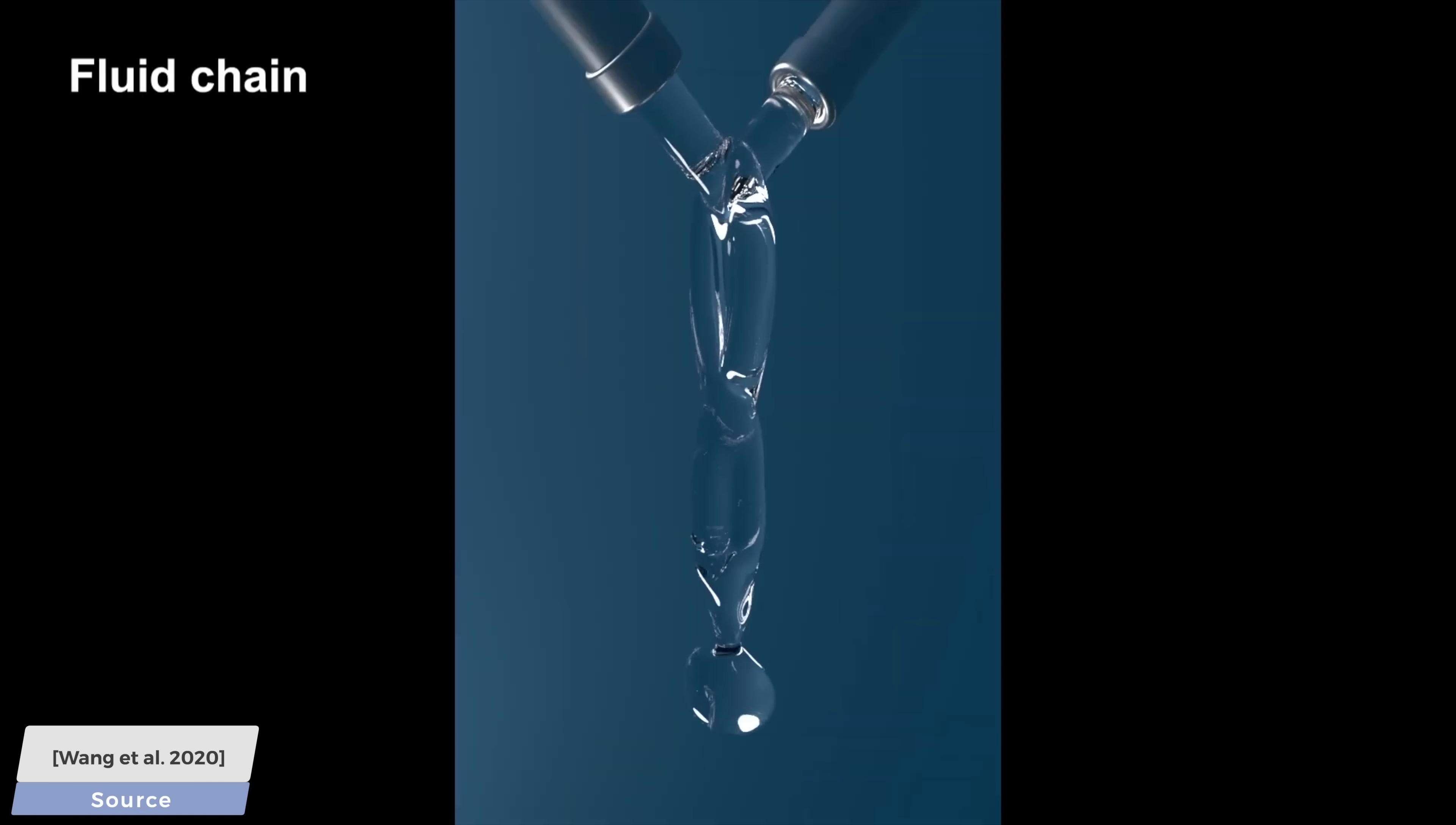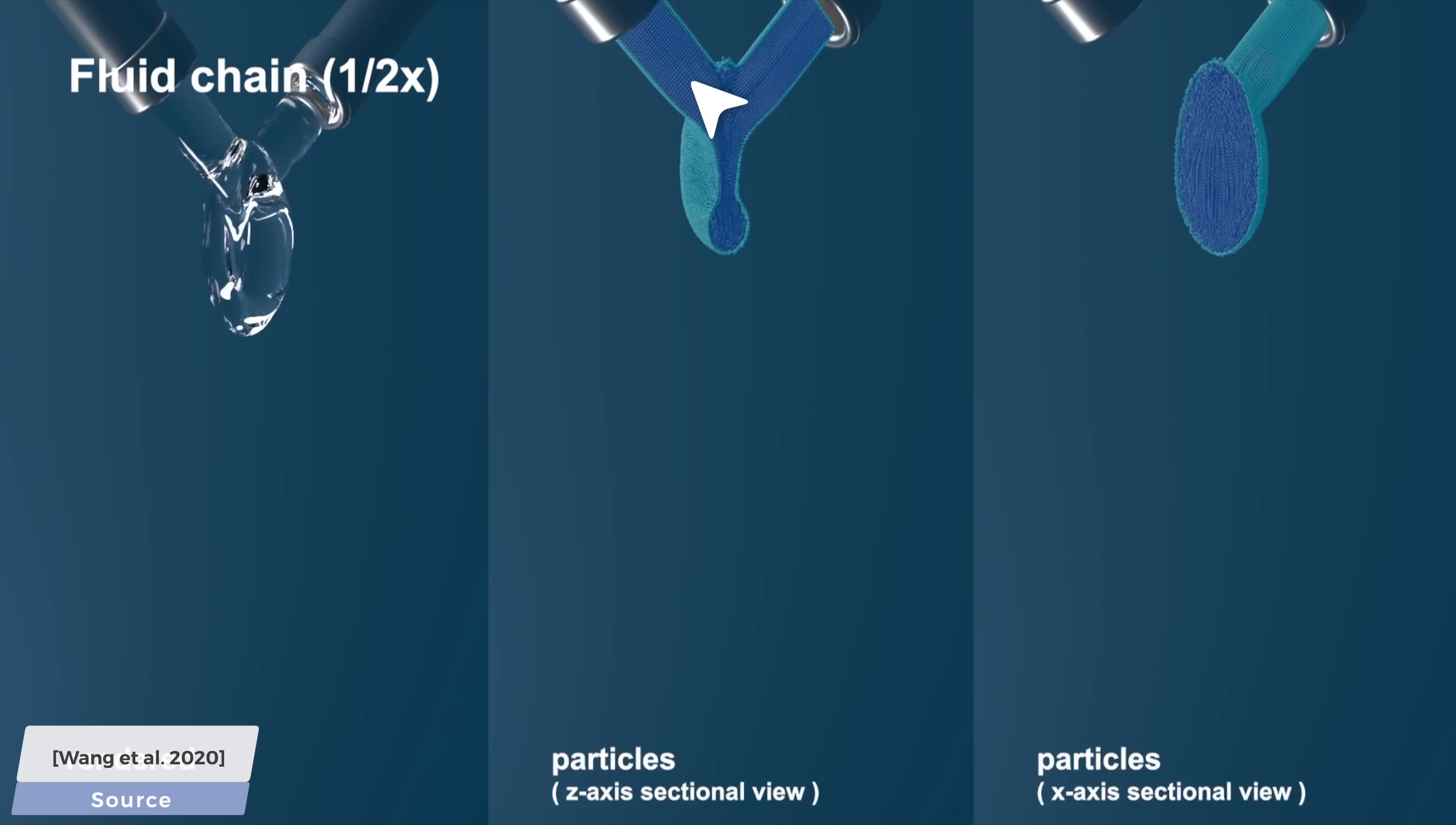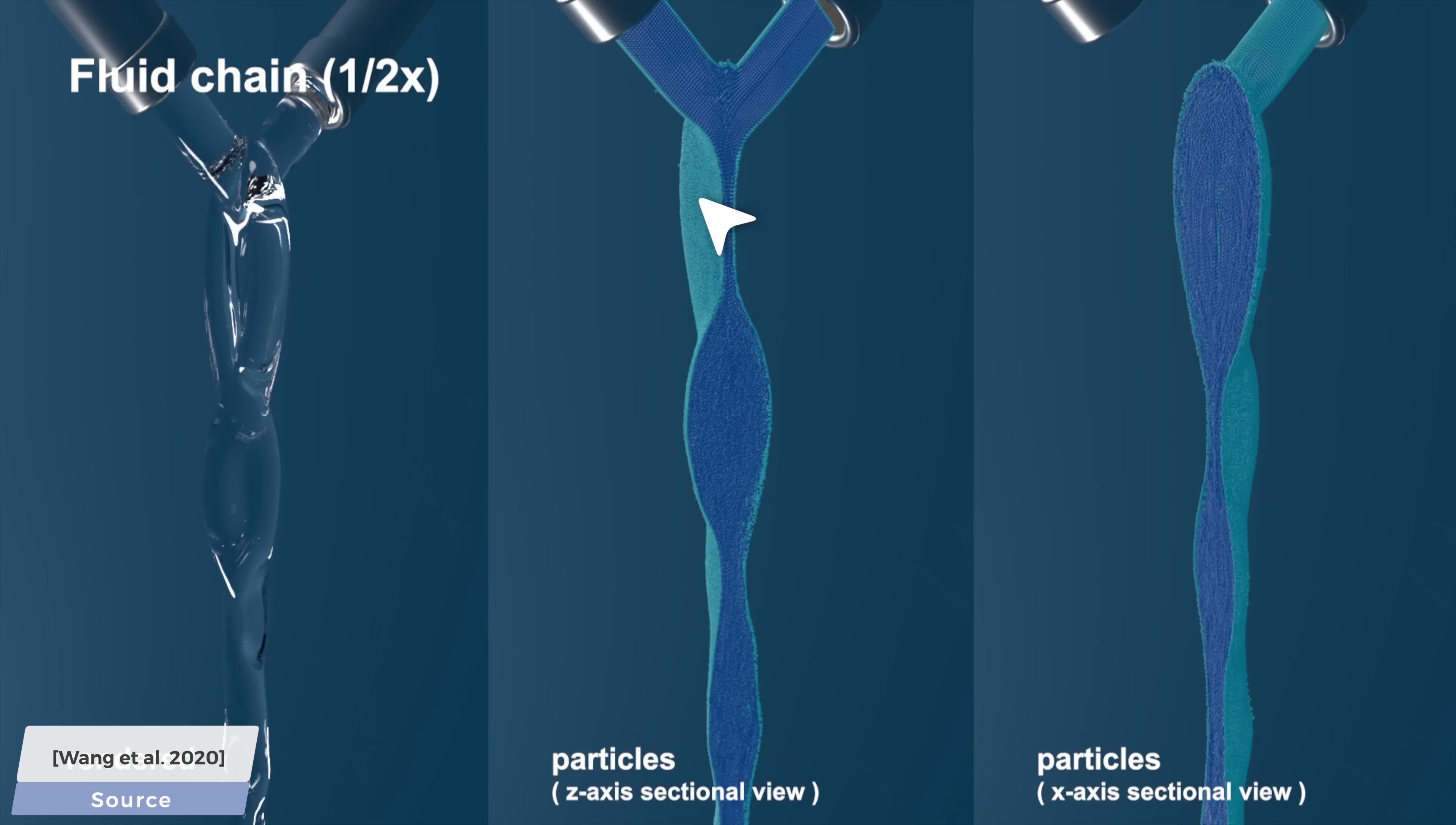And, after we finish the simulation of these fluid chains, we can look under the hood and see how the algorithm thinks about this piece of fluid. Once again, with dark blue, we have the particles that represent the inner volume of the water chains. There is a thin layer of sheet particles holding them together. What a clean and beautiful visualization.